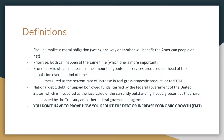The biggest thing is that economic growth is measured using GDP or real GDP. Similarly, national debt is just unpaid borrowed funds carried by the federal government — borrowed funds from countries like China or the UK.